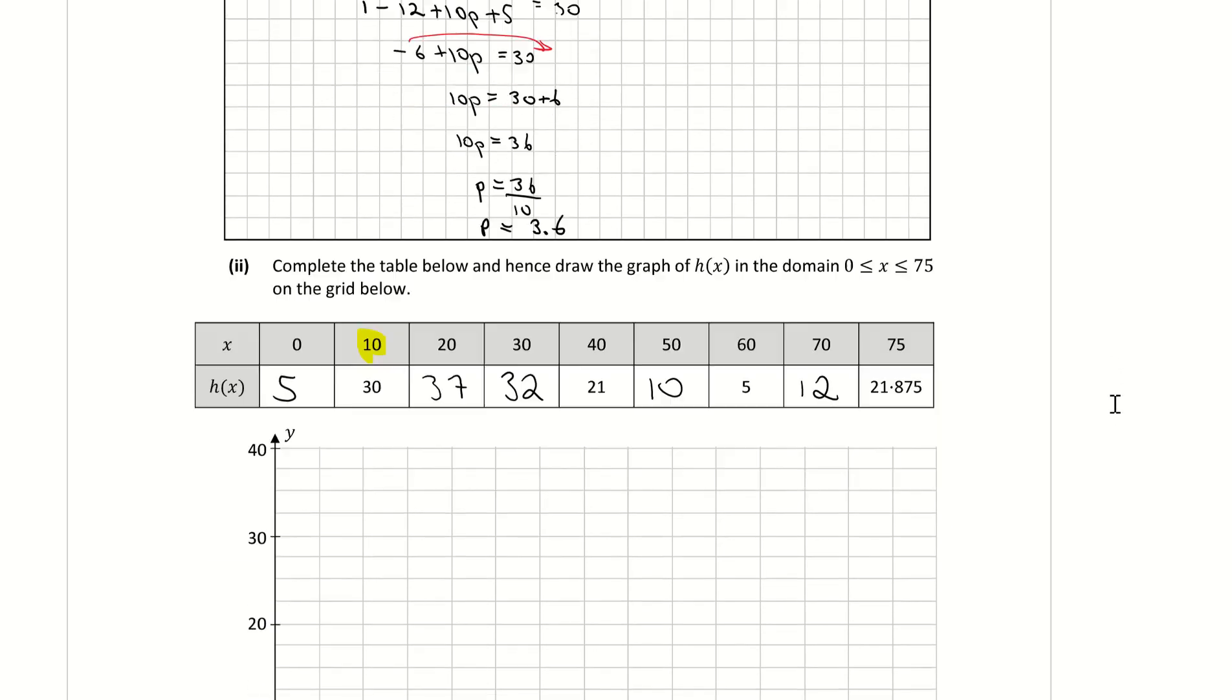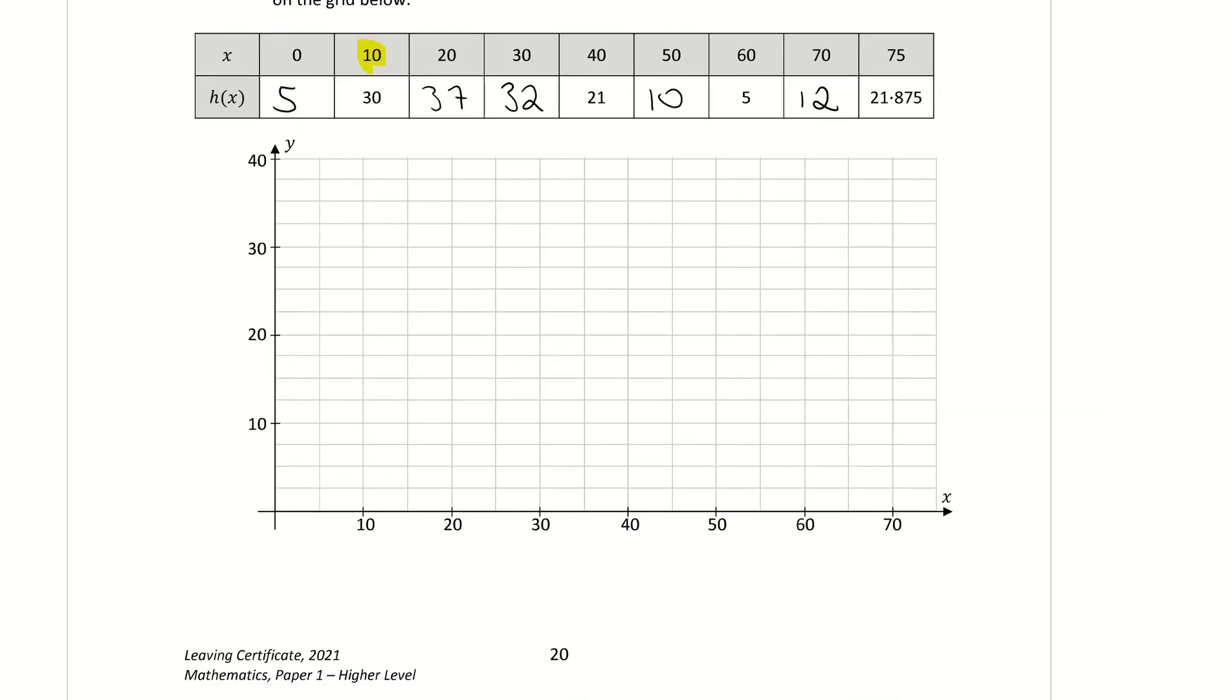I'm now going to just sketch them onto the curve or onto the graph now. So my second last one is 70, 12. I'm coming across from 12 to 70, which is roughly about here. And my final one is 75, 21.8. So 75, which is here, and I'm going up to 21.8, which is roughly around here. So there are my coordinates. And I'll sketch a freehand curve of the graph, which looks something like that.